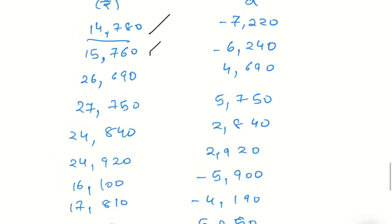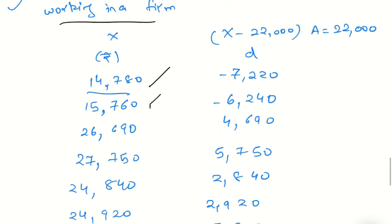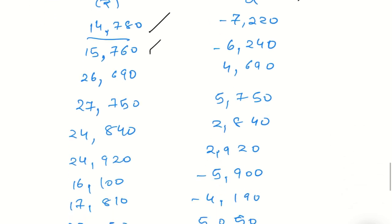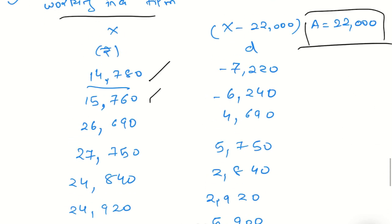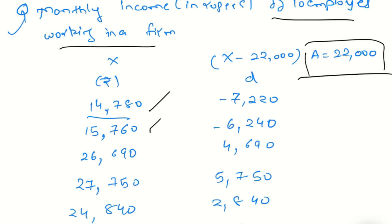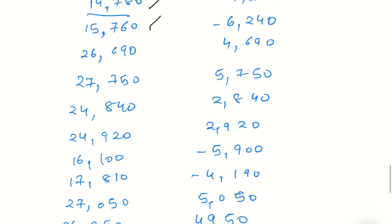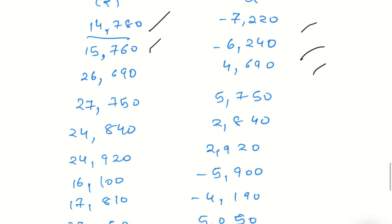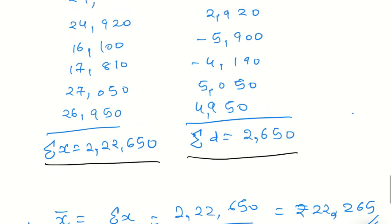In this figure, we have large numbers like 10,000. So we use the shortcut method. We use an arbitrary point or assumed mean. We can take any value, but let's use 22,000 as our assumed mean. According to our data, we calculate d, which is x minus a. We have 22,000 minus each value, then add up. Sigma d is 2,650. See the difference: 22,650 versus 2,650, much easier to work with.